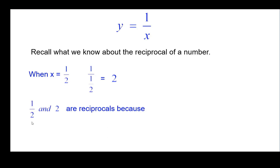And 1 half and 2 are reciprocals because their product is 1. And if you look at the equation y equals 1 over x, if you multiply both sides by x, it's equivalent to x times y equals 1, which shows that the product is 1.